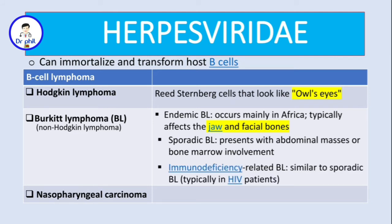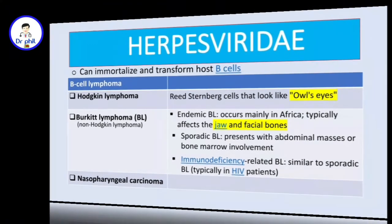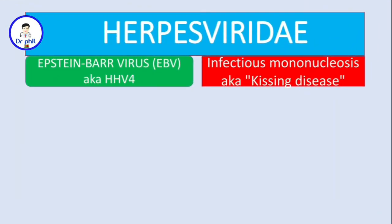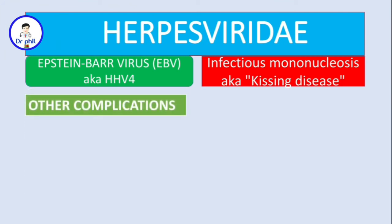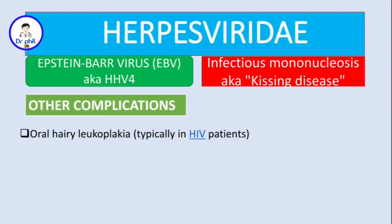There can also be immunodeficiency-related Burkitt's lymphoma, which is similar to sporadic Burkitt's lymphoma and typically occurs in patients with HIV. Lastly, nasopharyngeal carcinoma is another oncogenic complication. Other complications include oral hairy leukoplakia, which typically occurs in HIV patients.